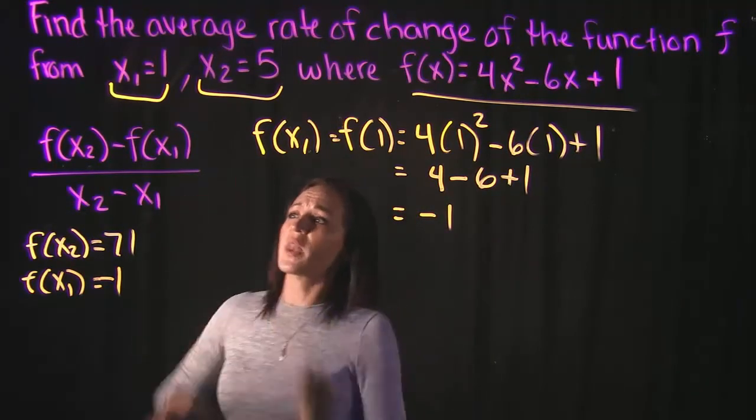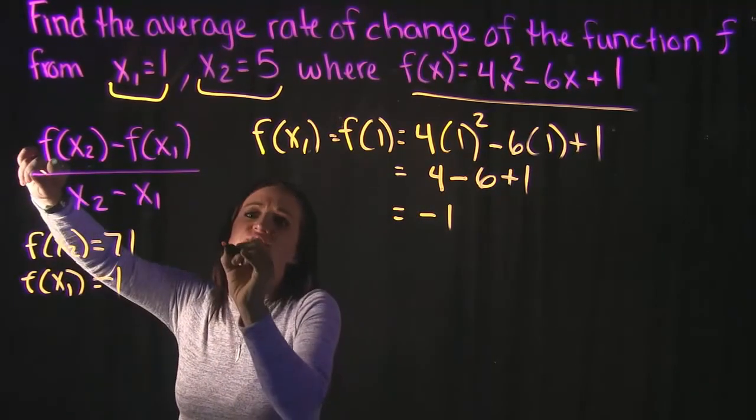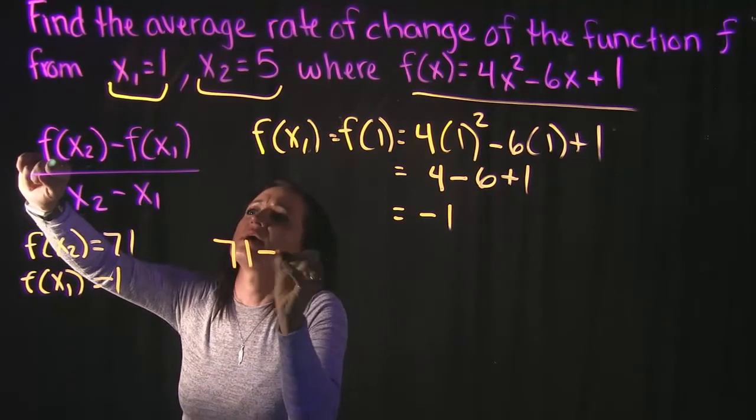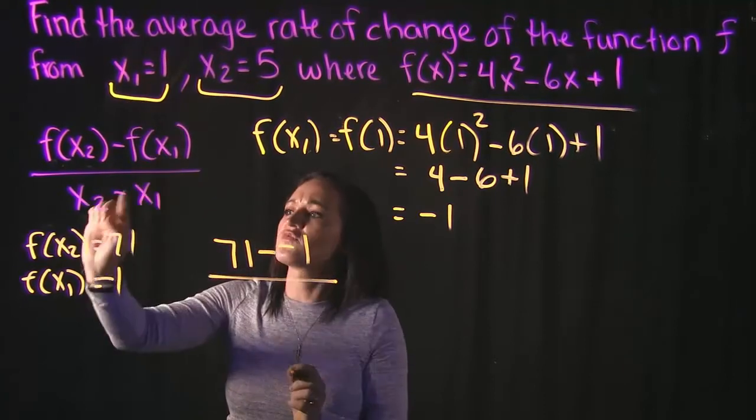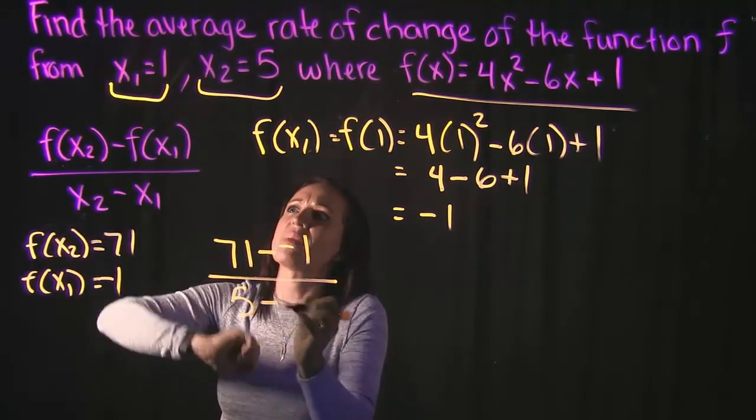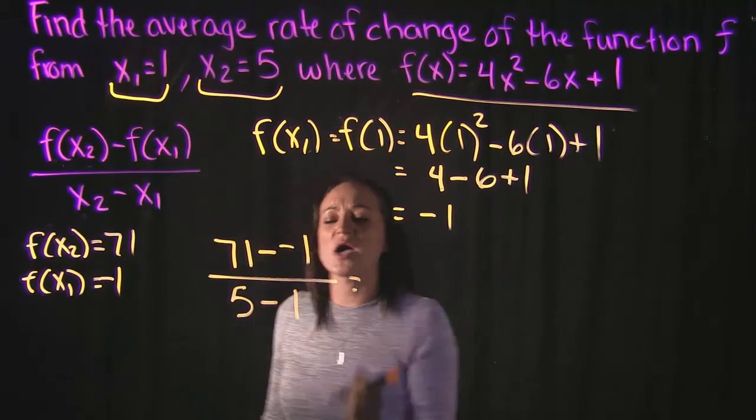So we should be able to now plug into our formula. f(x2) is equal to 71, minus f(x1) is equal to negative 1, over x2, which is 5, minus x1, which is 1.